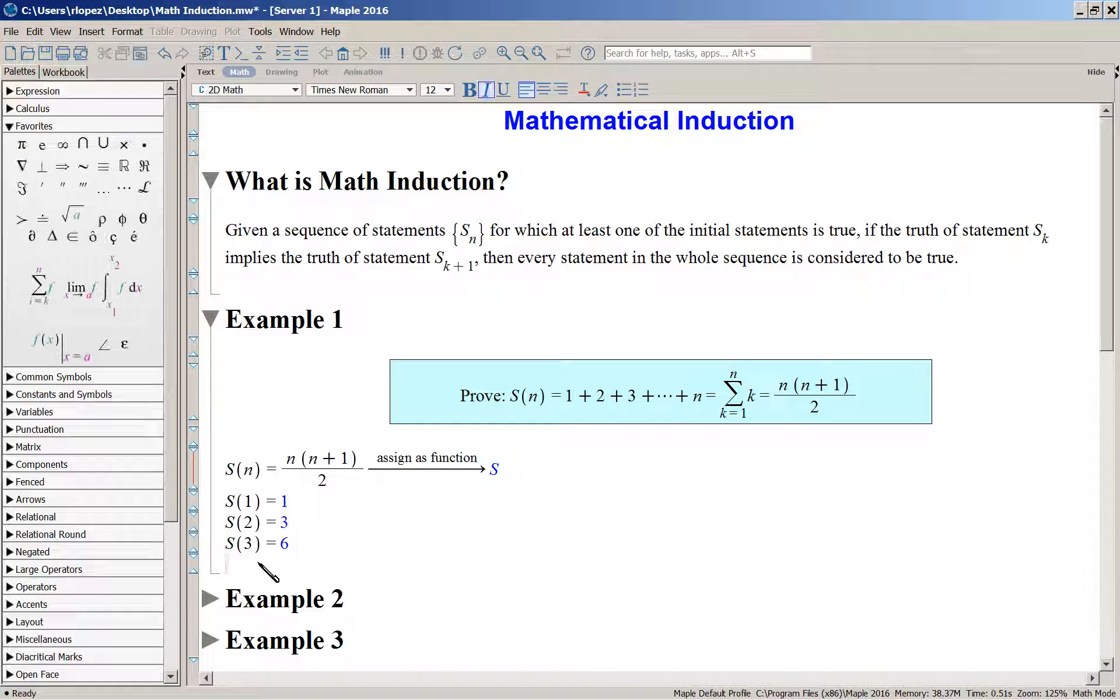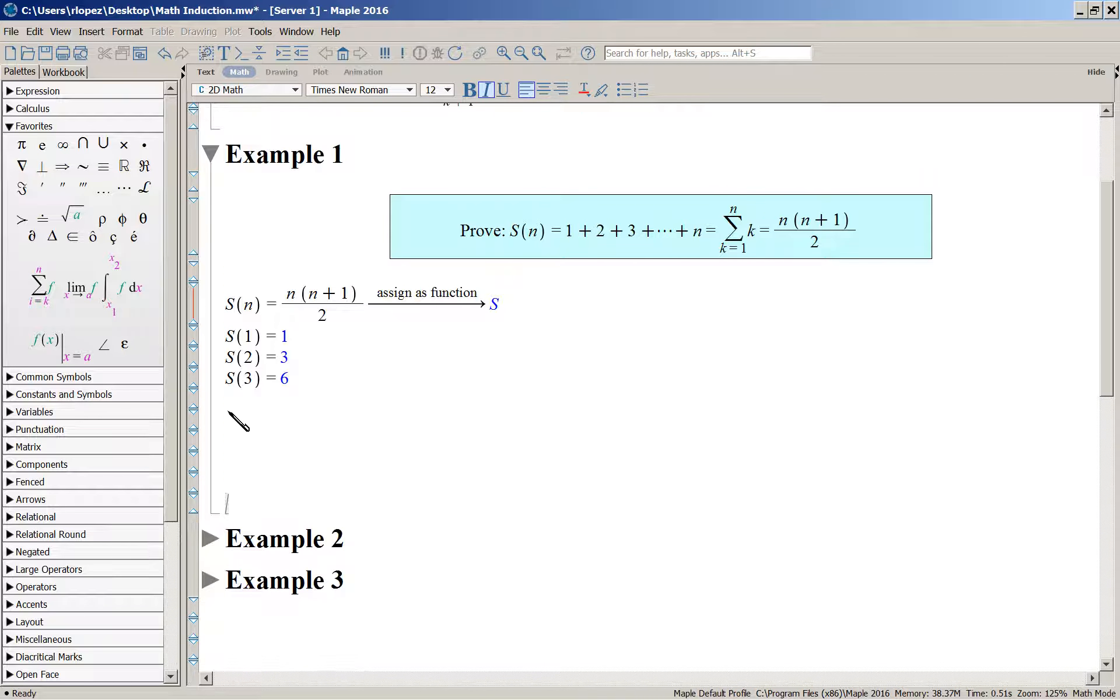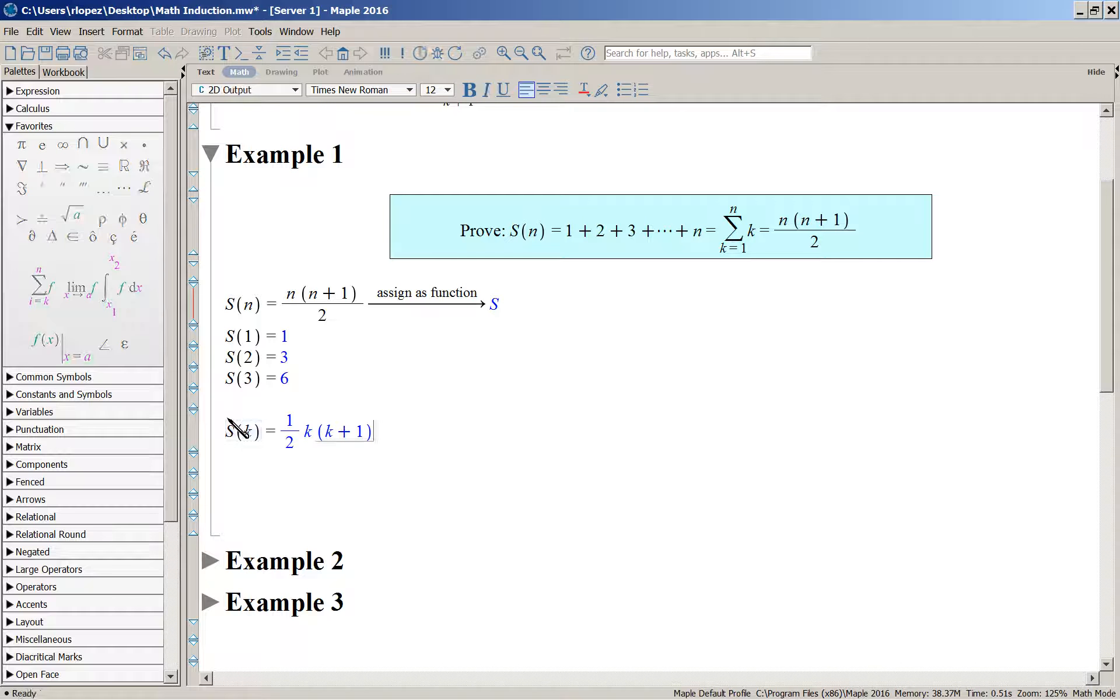Okay, so now how do you go from the statement Sk, which is this, and it would look like that. It's one-half K times K plus one, to Sk plus one. The next statement. Well you've added K plus one.